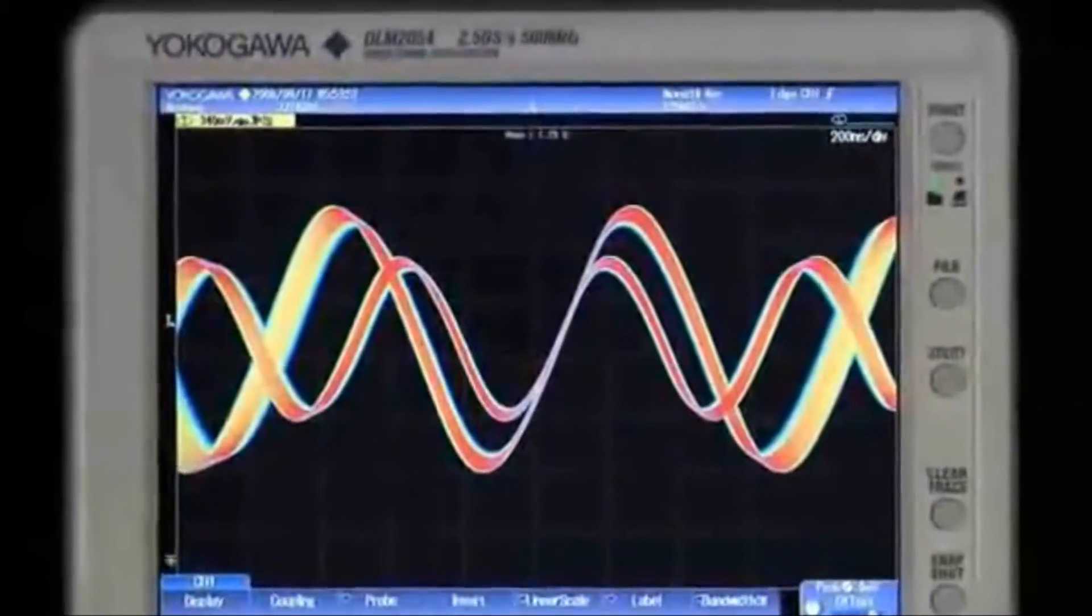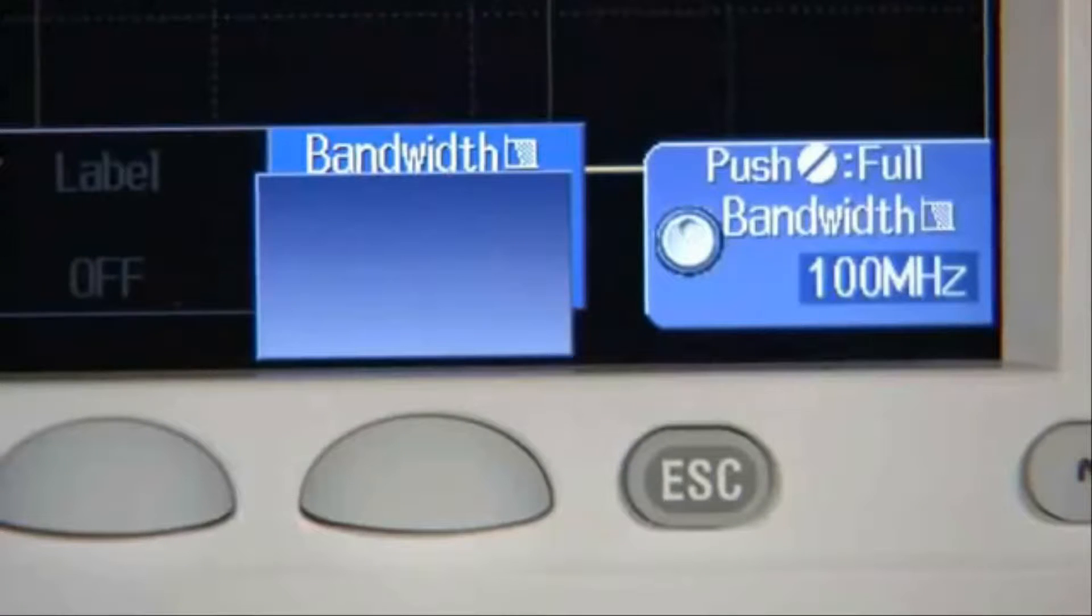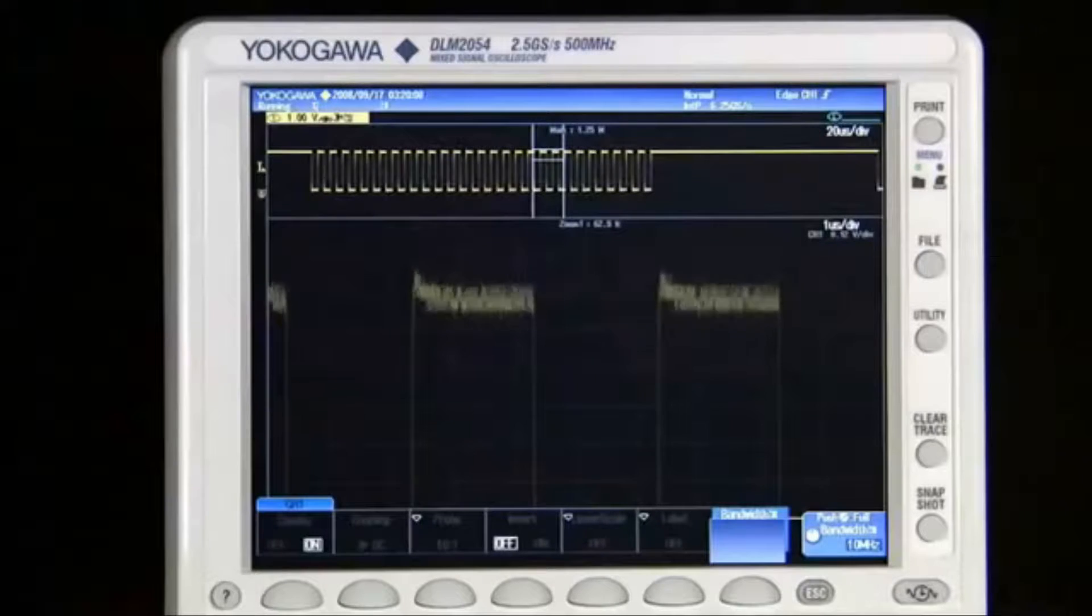With the DLM2000, you'll have total control over how your signal is displayed. Fifteen bandwidth filters on each channel let you suppress high-frequency noise.